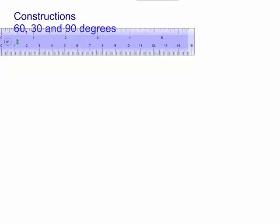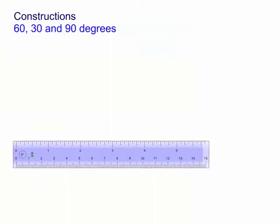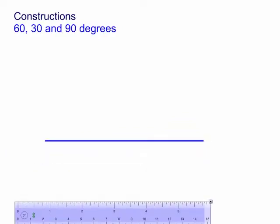We'll grab a ruler. First thing I always do is just draw a line. Here we have a new line, and now we want to construct, say, 60 degrees. We normally do it at a point, so let's put a point on the line, say A.